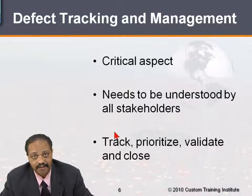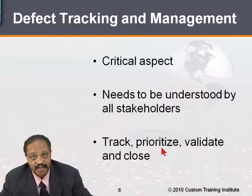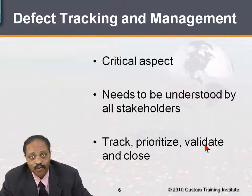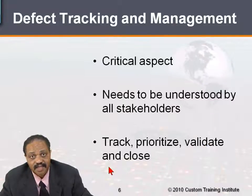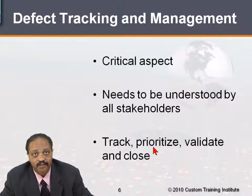Not only do we have to keep track of defects, we have to prioritize them so we know which ones are really important and need to be fixed first, and which are the ones that are annoying but can wait until the real showstoppers get fixed. Then we have to validate those problems, making sure that they are repeatable as opposed to once-off problems. And then once they've been validated and fixed, we need to close them to indicate we've found the problem, verified it, implemented a solution, and verified the solution. So we have to track, prioritize, validate, and close our defects.